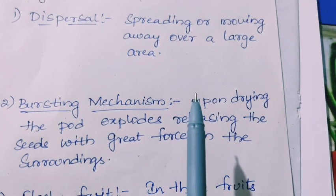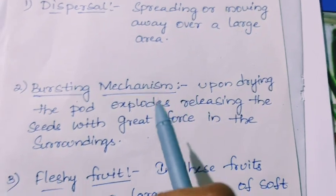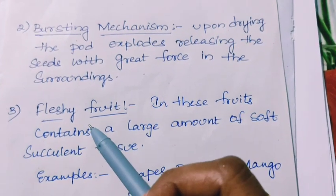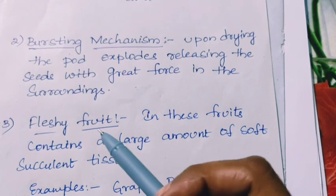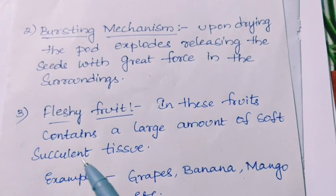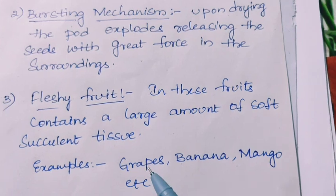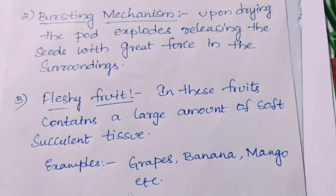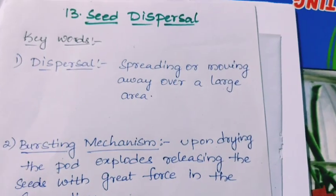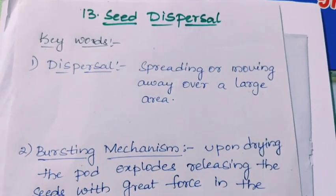The seeds and fruit fall on the ground and become new plants. The last keyword is fleshy fruit. We have different types of fruits, and fleshy fruits contain a large amount of soft succulent tissue. For example, grapes, banana, mango, papaya, etc. are all fleshy fruits. These are the keywords for seed dispersal. Thank you, children — keep watching Science Innovators.